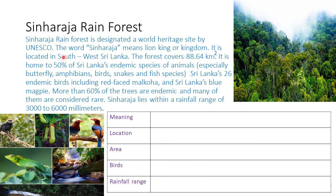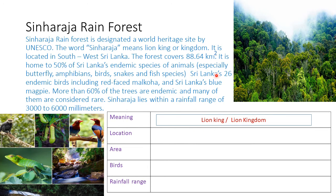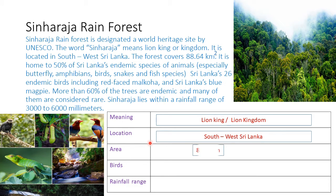Sinharaja Rainforest is designated a World Heritage Site by UNESCO. The word Sinharaja means Lion King or Kingdom — that's the meaning. It is located in South West Sri Lanka — that's the location. The forest covers 88.64 square kilometers — that's the area.